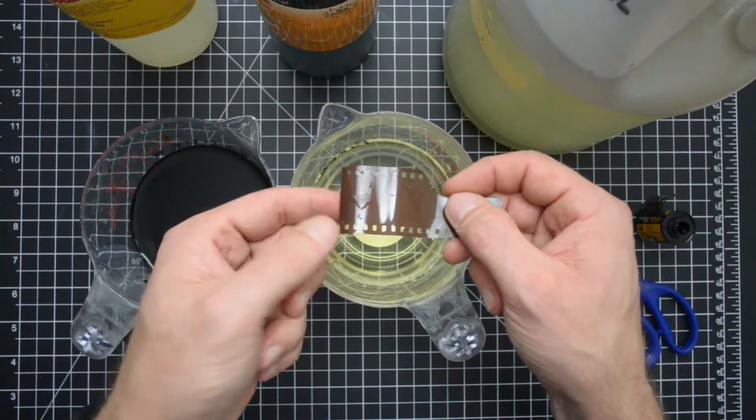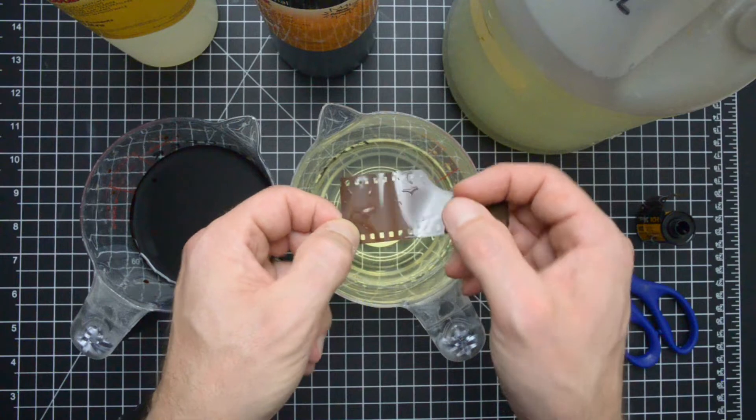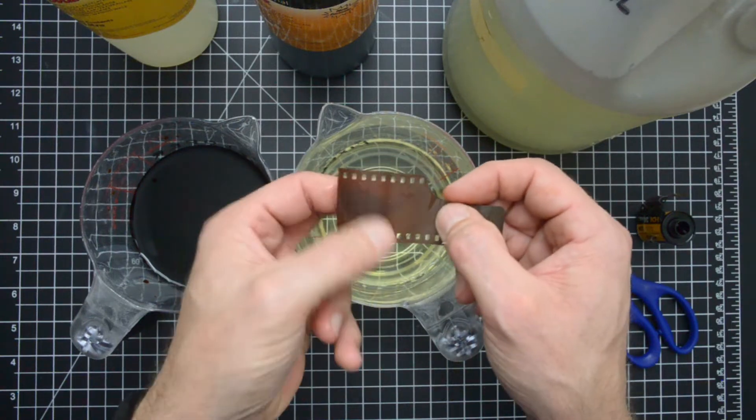Okay, so it looks like the fixer is still good and it has become clear now on this side of the negative.